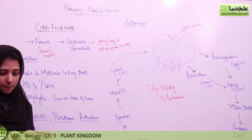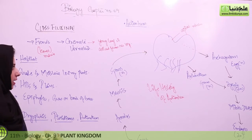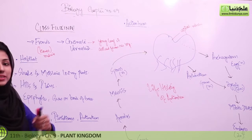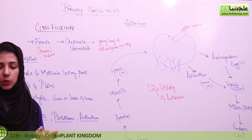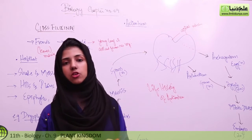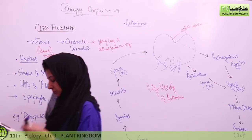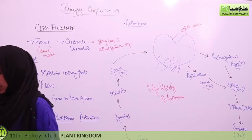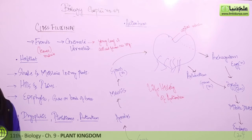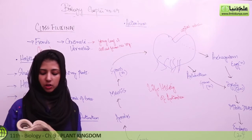Large pinnately compound fronds arise from the upper side of the rhizome. In the immature stage, they show the process of circinate vernation. The leaflets and pinnules — pinnules are the leaflets of second order; these are small leaves known as pinnules. They show dichotomous venation.